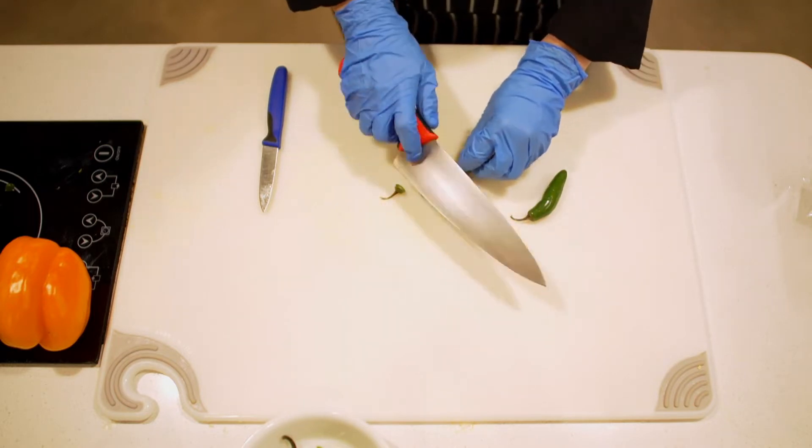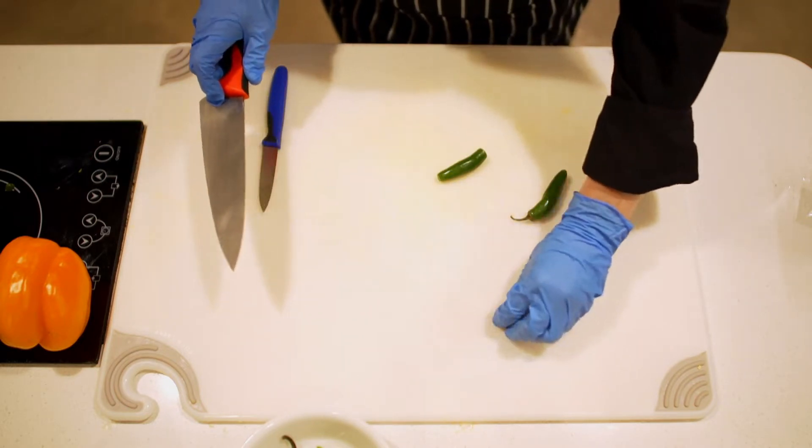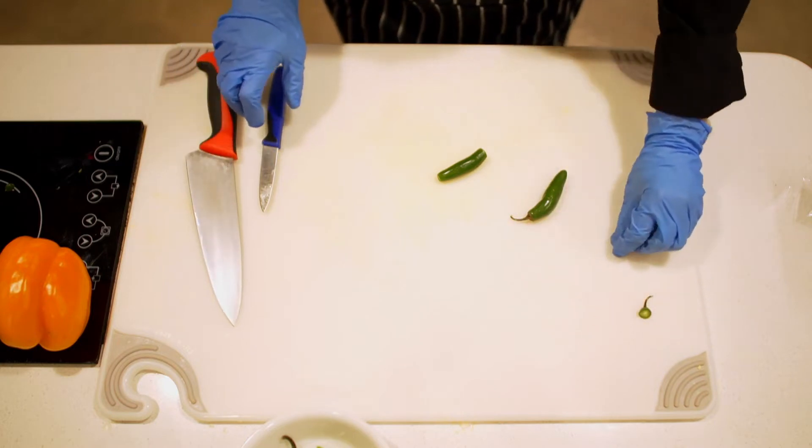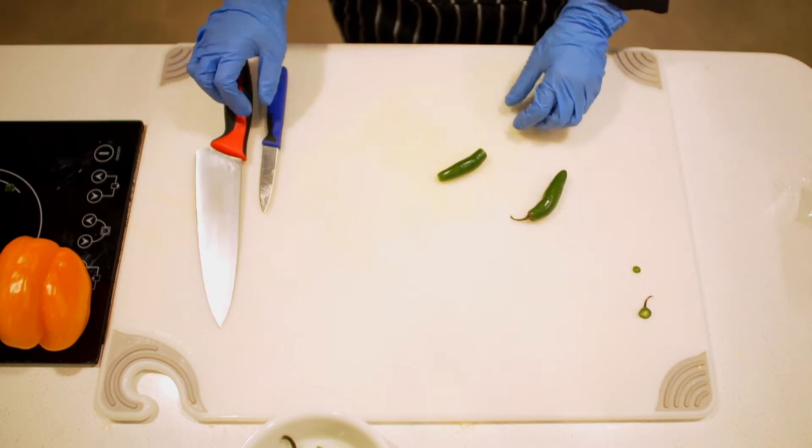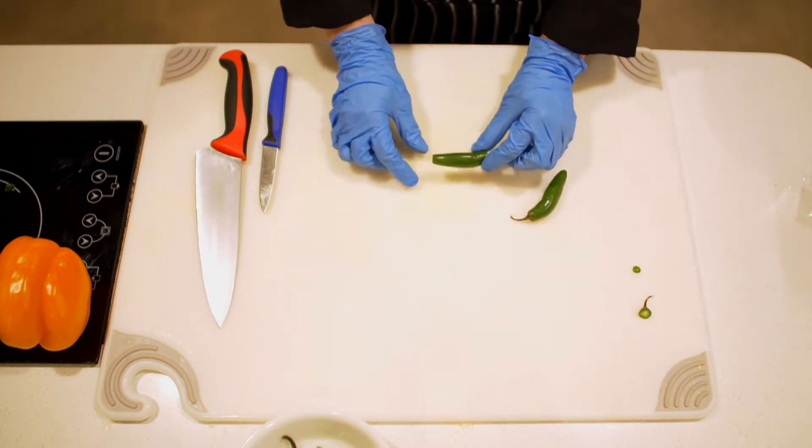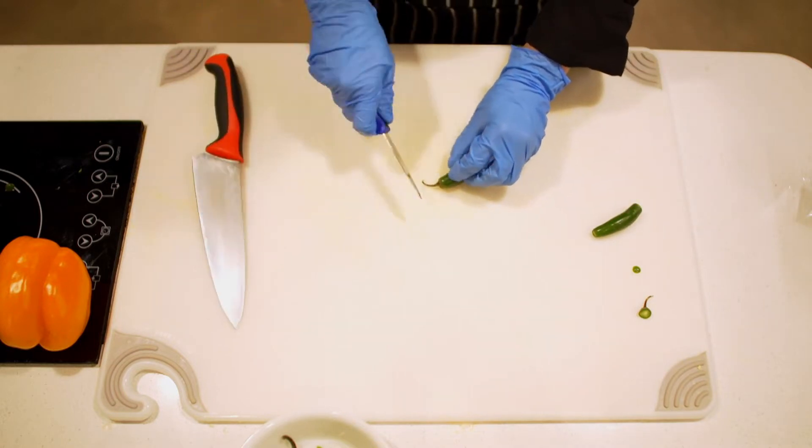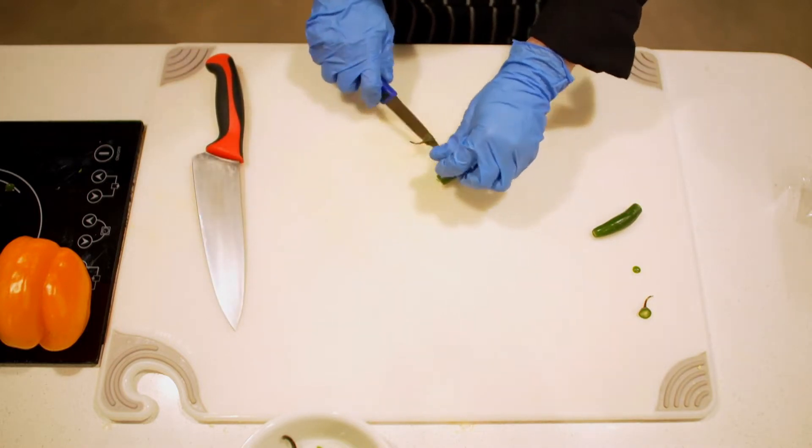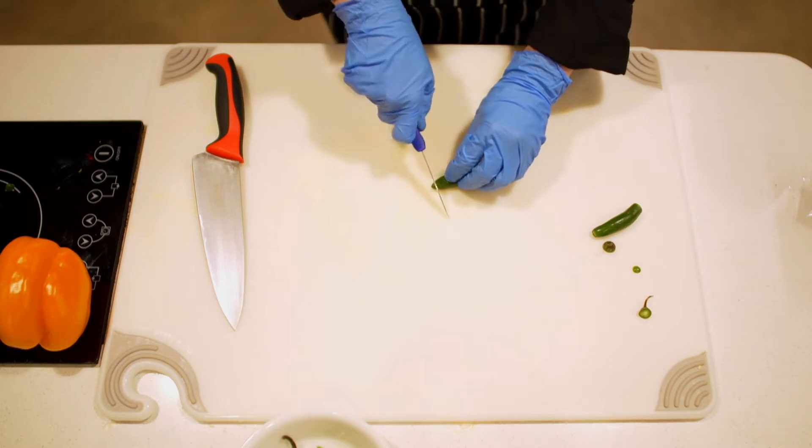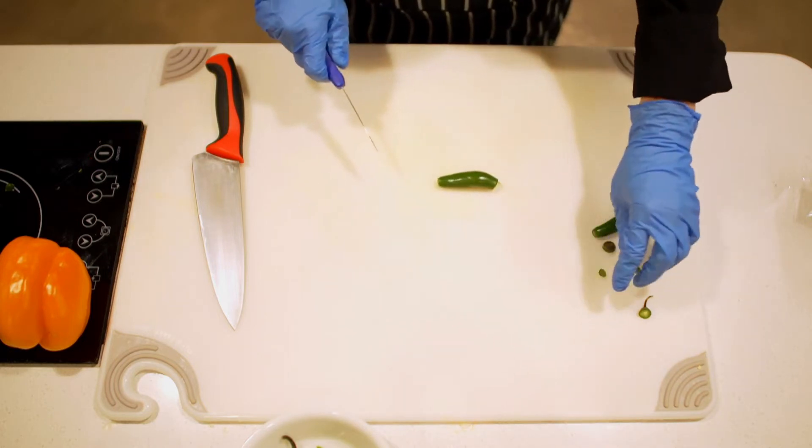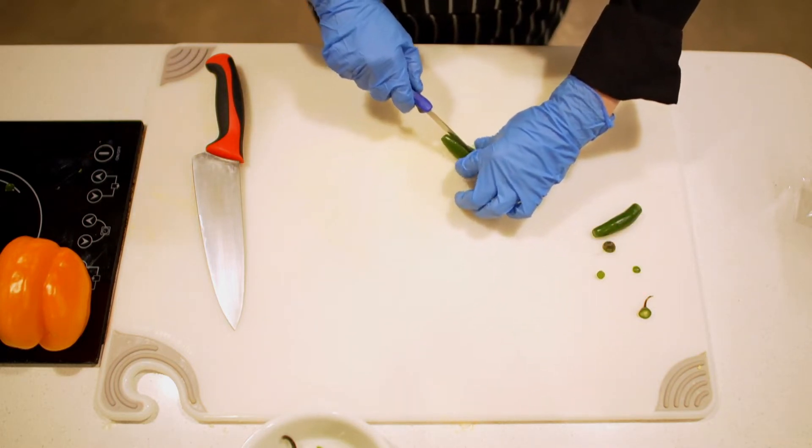If you're not comfortable working with a large chef knife with such a small piece of food, it's totally appropriate to use your paring knife. Cut this off, cut a tiny bit of the tip of the chili off, and then slice it lengthwise like this.